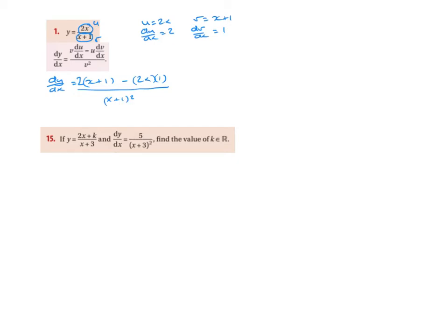We're going to tidy up the top. We get 2x plus 2 minus 2x, all over (x plus 1) squared. The 2x and minus 2x cancel out, and we end up with 1 over (x plus 1) squared. That's the final dy/dx.